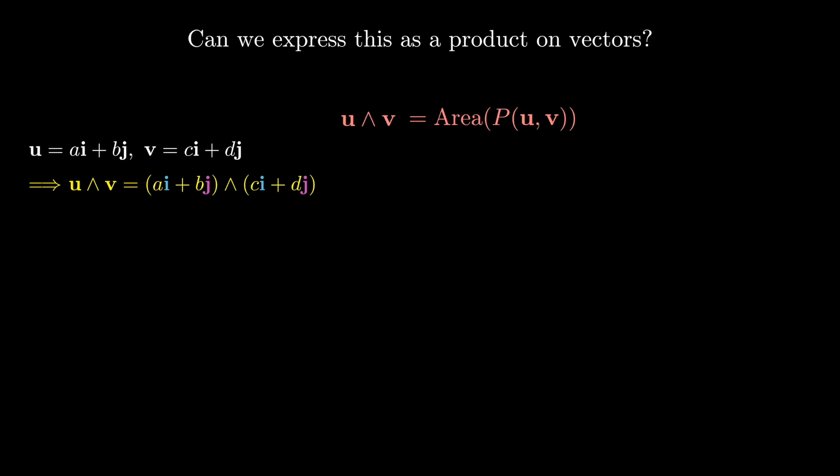We'll assume that it's distributive, so we can foil it out in the sense that we'll now have ai wedge (ci + dj) plus bj wedge (ci + dj). And then this would further expand to ac(i∧i) + ad(i∧j) + bc(j∧i) + bd(j∧j).